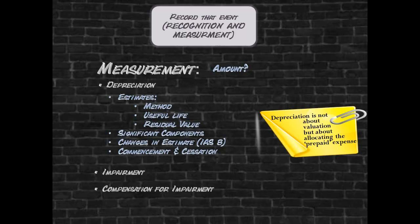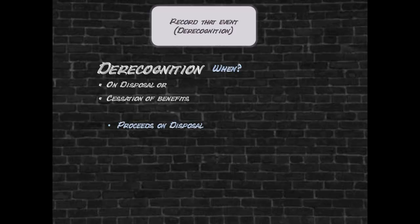Depreciation is based on a component approach and requires various estimates that need to be reviewed annually. A change in any of these estimates will require additional disclosure. Property, plant and equipment should be de-recognized when no future economic benefits are expected from the item, as it then no longer meets the component of the asset definition relating to future economic benefits flowing to the entity, as contained in the framework.